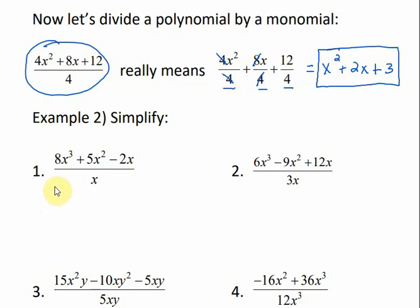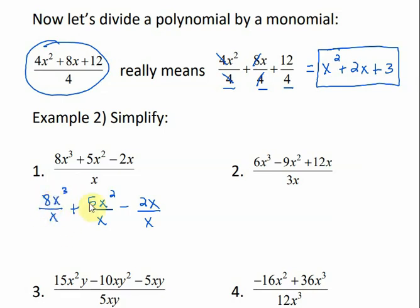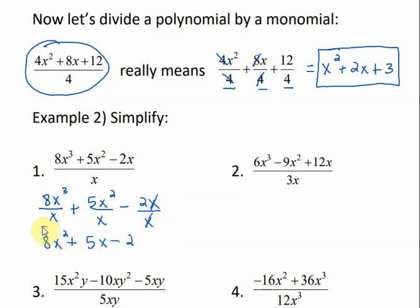For number 1, we separate it out: 8x cubed divided by x, plus 5x squared divided by x, minus 2x divided by x. The coefficients stay on top. x cubed divided by x is x squared, on top. Bring down the 5 — x squared divided by x leaves x, because 2 minus 1 is 1. Minus 2, and those x's cancel out. This is my solution.